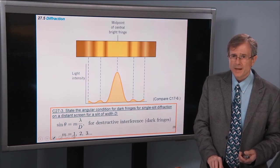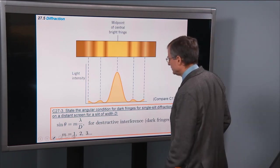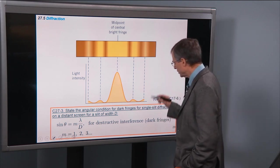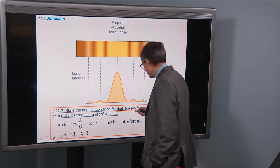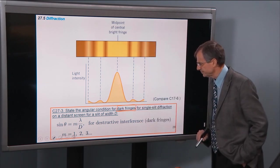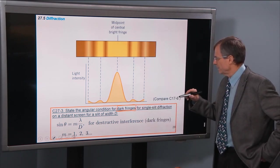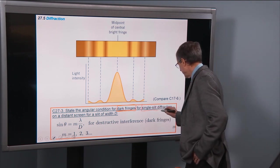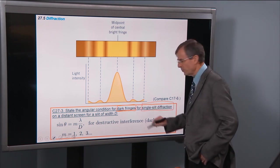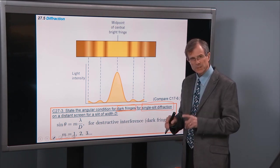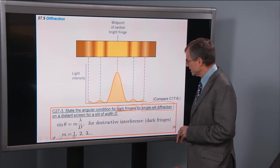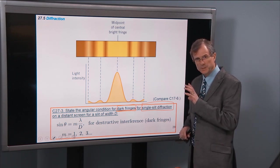Now if you do the math, you get that for dark fringes, so remember this is what we're talking about is dark fringes here. For diffraction, single slit diffraction. So we're not in Kansas anymore, it's not a double slit, it's a single slit that produces a diffraction pattern. Similar to an interference pattern, but different.